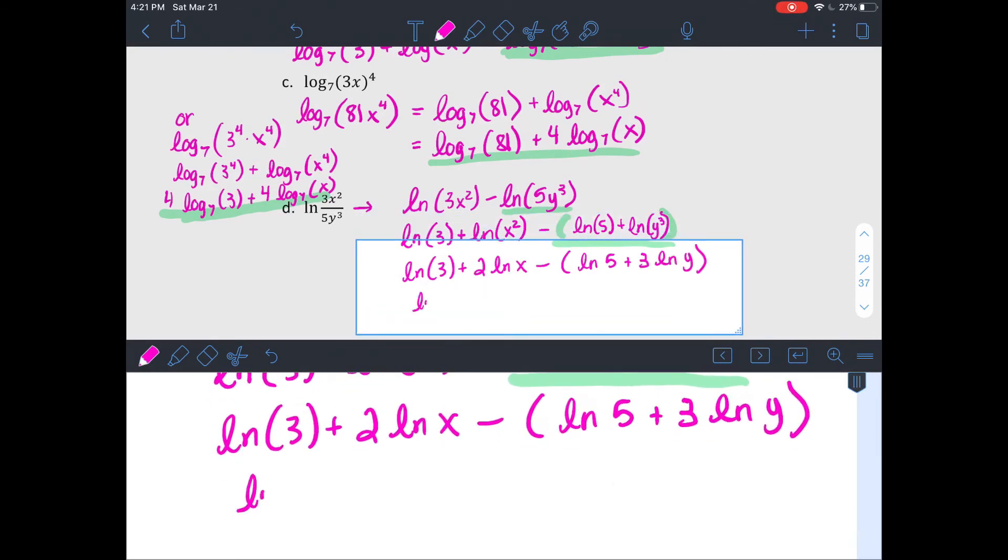Finally, I'm going to distribute my negative, multiply it in, times both my natural log of 5 and my 3 natural log of y. There we go.